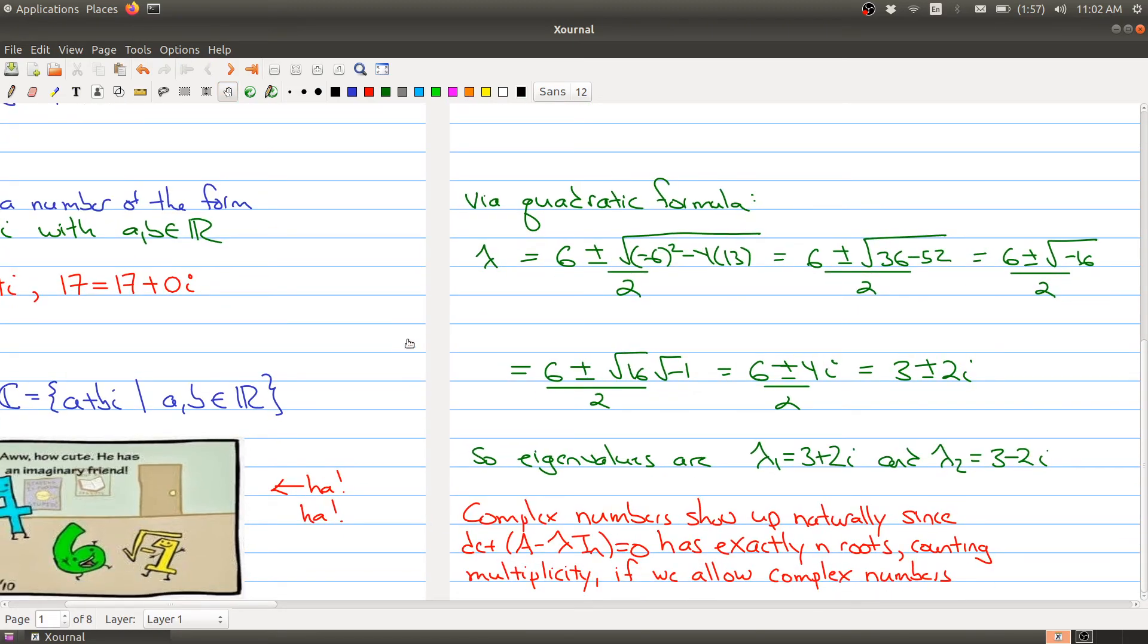Complex numbers will show up naturally. When you're looking at the characteristic equation, this equation is a polynomial of degree n in lambda. The fundamental theorem of algebra says they will have exactly n roots counting multiplicity if we allow complex numbers. When you take a polynomial randomly, you will probably find complex numbers.